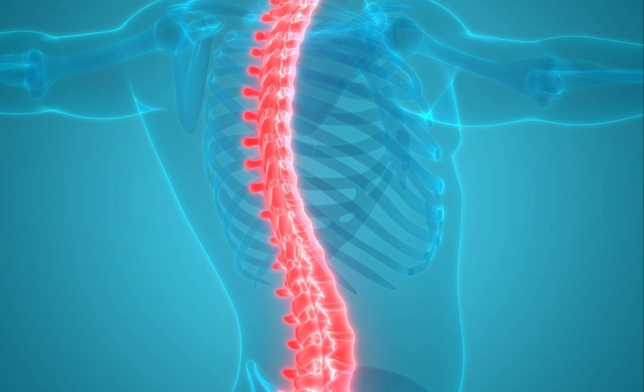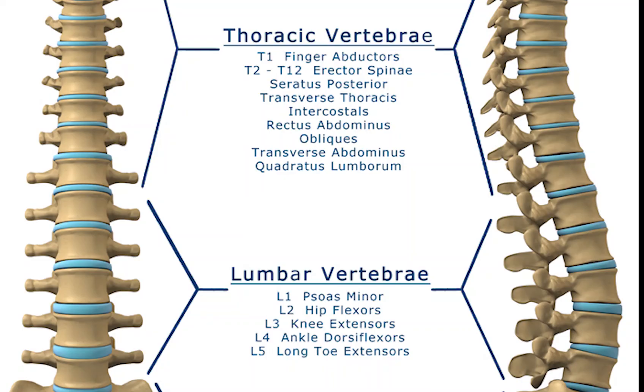The number of vertebrae in a region can vary, but overall the number remains the same. In a human vertebral column, there are normally 33 vertebrae. The upper 24 presacral vertebrae are articulating and separated from each other by intervertebral discs; the lower 9 are fused in adults — 5 in the sacrum and 4 in the coccyx, or tailbone.